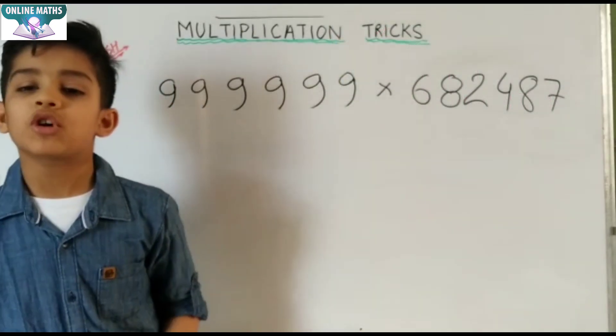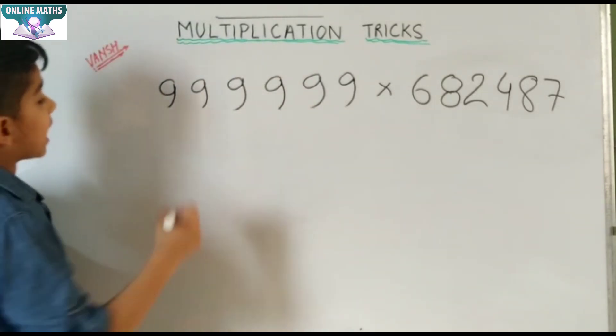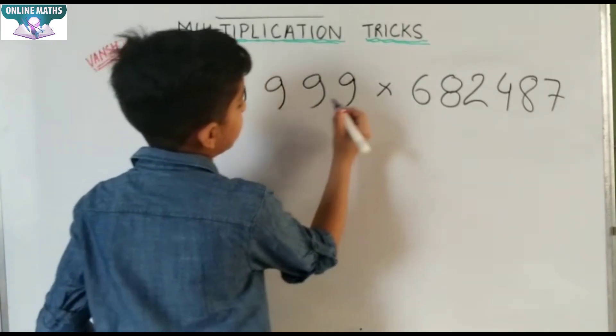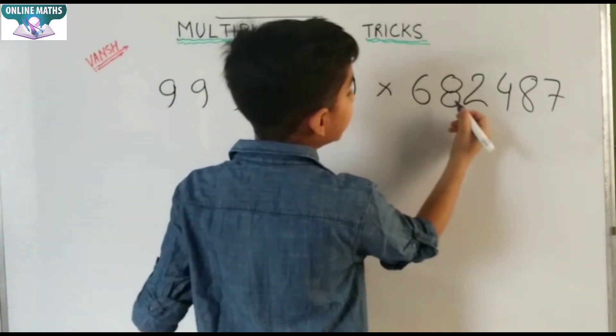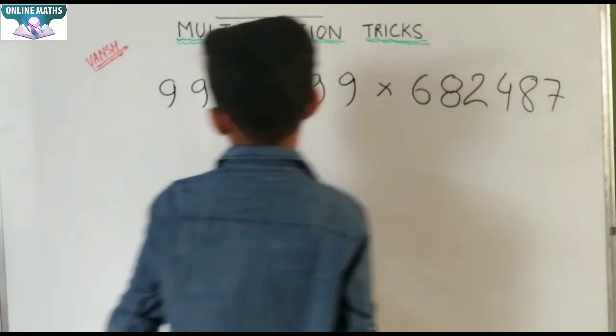Let's take one more example. Our second example is 99999 multiply by 682487.